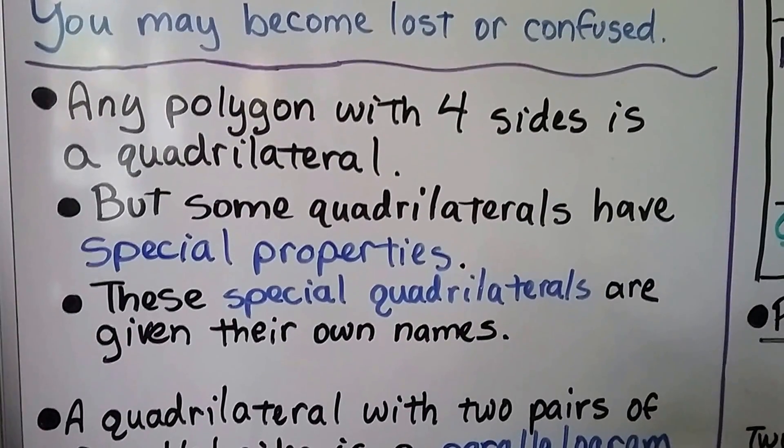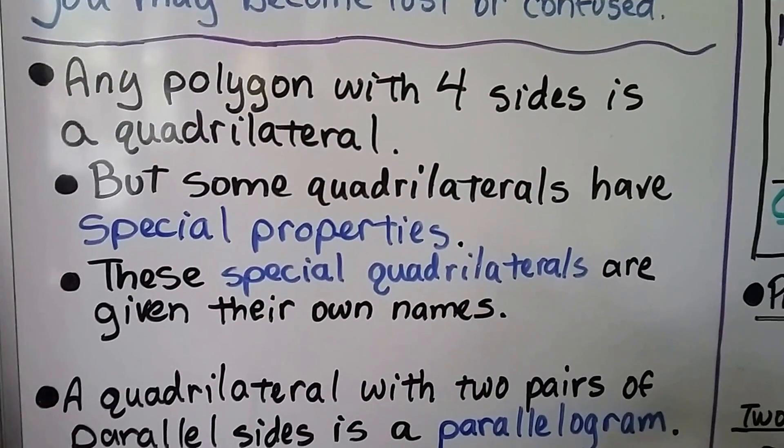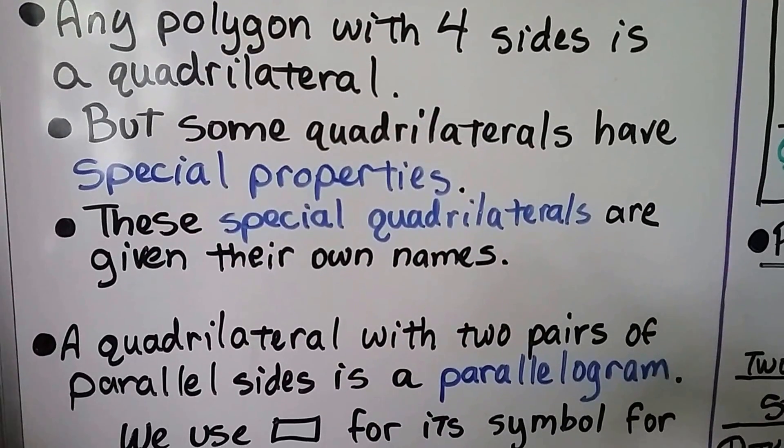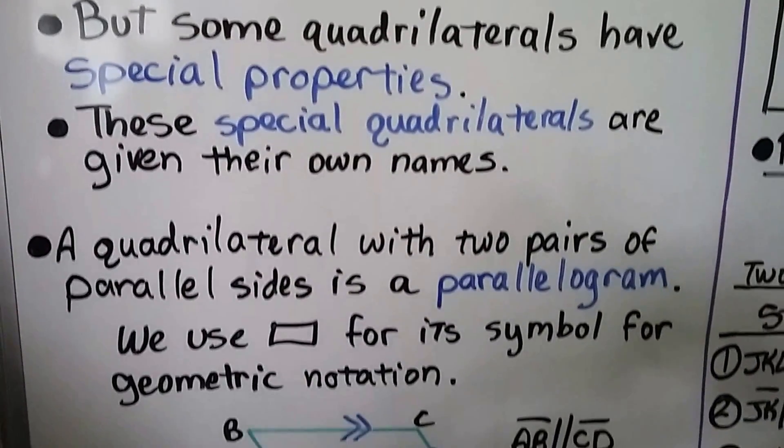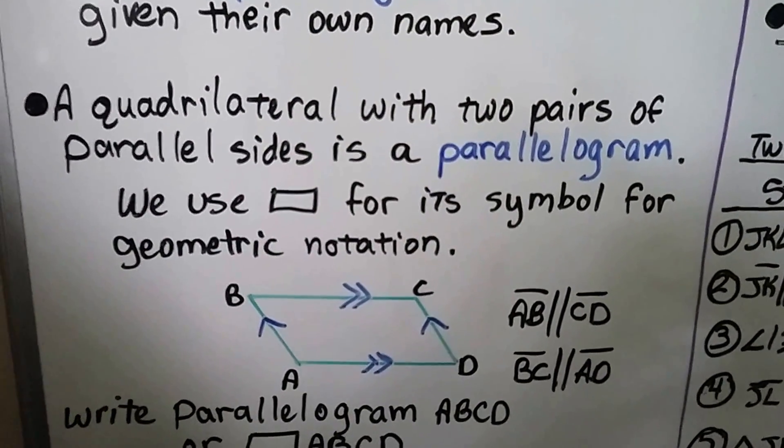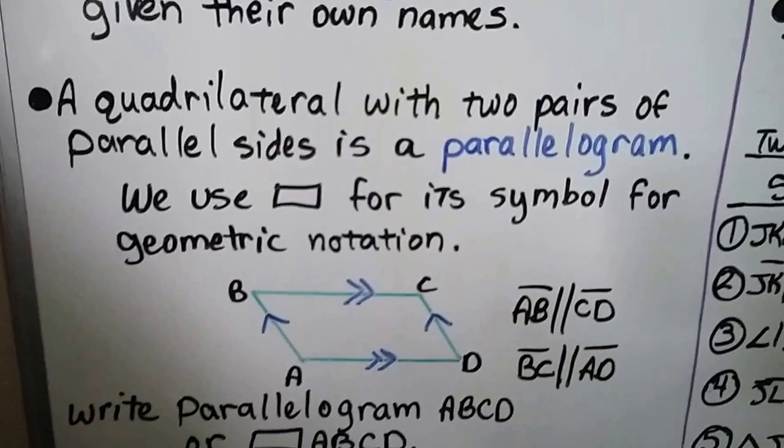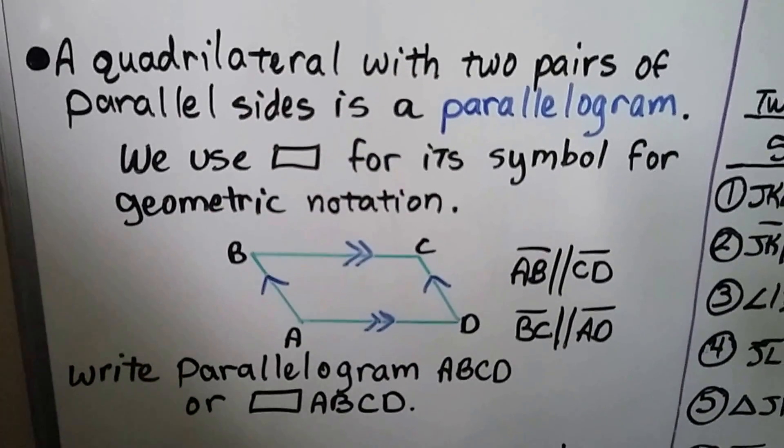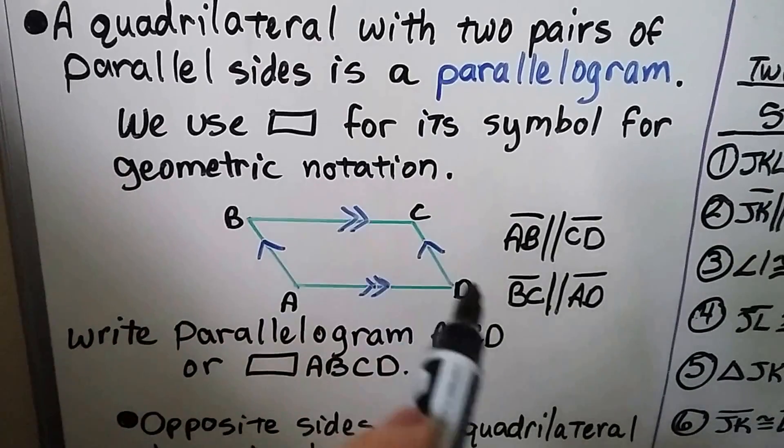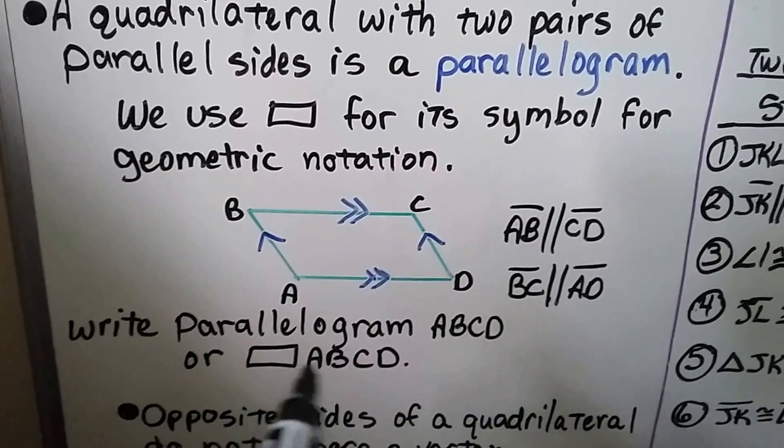Any polygon with four sides is a quadrilateral, but some quadrilaterals have special properties, and these special quadrilaterals are given their own names. A quadrilateral with two pairs of parallel sides is a parallelogram. We can use this little rectangle for its symbol for geometric notation, and we can write parallelogram ABCD, or we can put the little rectangle ABCD.